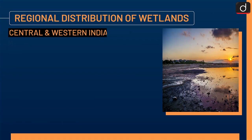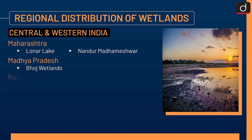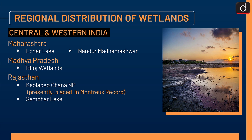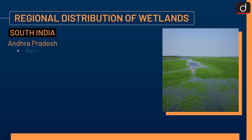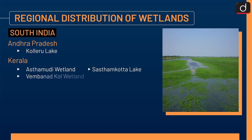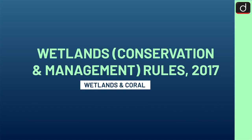Next is central and western India. Maharashtra: Lonar Lake and Nandur Madhameshwar. Madhya Pradesh: Bhoj Wetlands. Rajasthan: Keoladeo Ghana NP (presently in Montreux Record) and Sambhar Lake. Gujarat: Nal Sarovar Bird Sanctuary, Thol Lake Wildlife Sanctuary (declared 2021), and Wadhvana Wetland (declared 2021). In south India: Kolleru Lake in Andhra Pradesh; Kerala with Ashtamudi Wetland, Sasthamkotta Lake, and Vembanad-Kol Wetland; and Tamil Nadu with Point Calimere Wildlife and Bird Sanctuary.